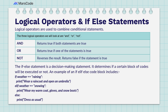The AND logical operator returns true if both statements are true, and the OR returns true if one of the statements is true. The NOT just reverses the result and returns false if the statement is true. The IF-ELSE statement is a decision-making statement — it determines if a certain block of code will be executed or not.